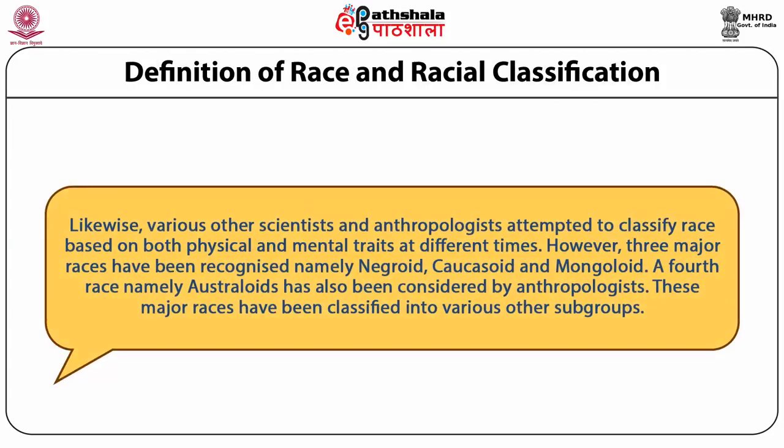Various other scientists and anthropologists attempted to classify race based on both physical and mental traits at different times. However, three major races have been recognized, namely Negroid, Caucasoid, and Mongoloid. A fourth race, namely Australoid, has also been considered by anthropologists. These major races have been classified into various other subgroups.